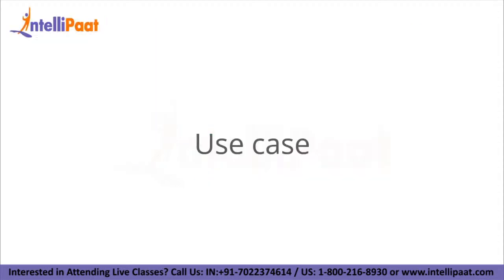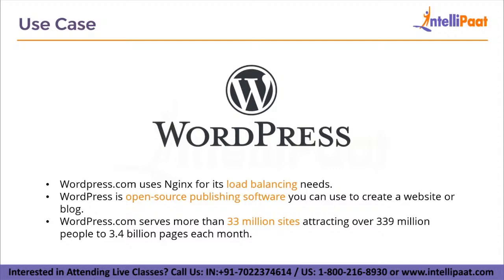Now let us take a look at a use case. All of you must have heard about WordPress.com, which basically allows you to set up a blog or small website on the web very easily. WordPress.com uses Nginx for its load balancing needs. WordPress is an open-source publishing software to create a website or blog. WordPress.com serves more than 33 million sites, attracting over 339 million people to 3.4 billion pages each month.